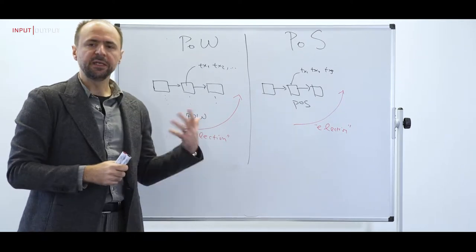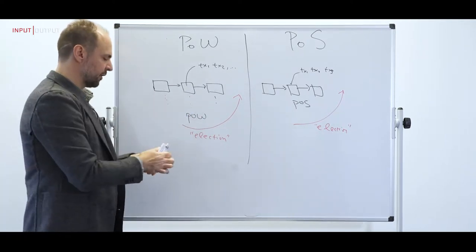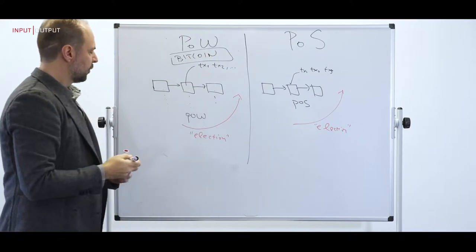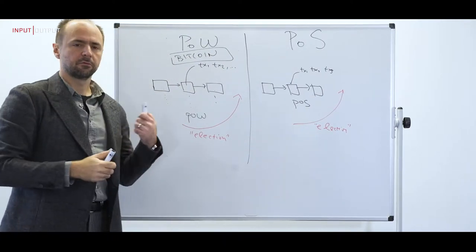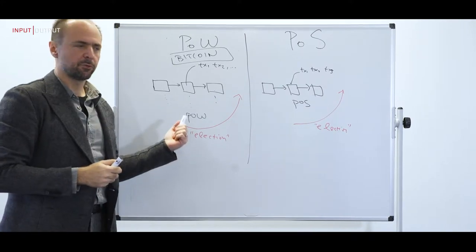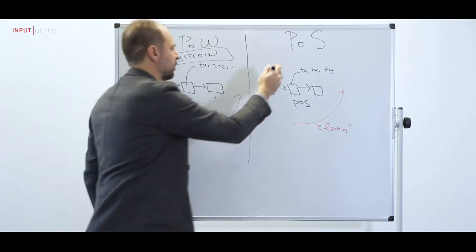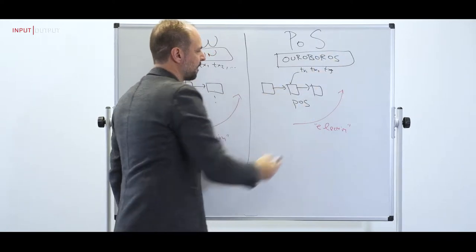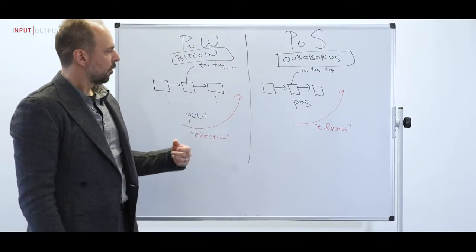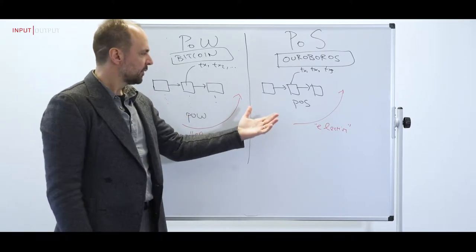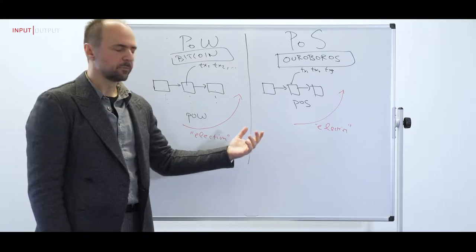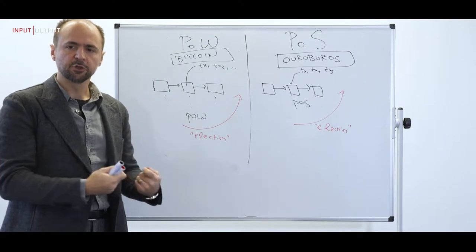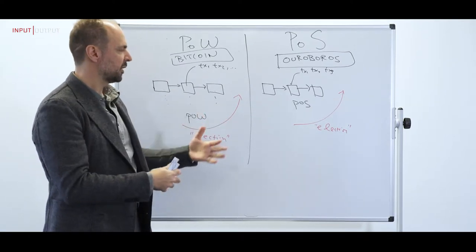You can think of both protocols as operating like an election — at any given moment, one of the parties is elected to produce the next block, essentially by random sampling. In proof-of-work, the election is based on solving a moderately hard cryptographic inequality, as in Bitcoin. In proof-of-stake, specifically Ouroboros, the election is based on a cryptographic protocol that creates randomness and stores it in the blockchain. In both cases, the high-level logic is similar: there is an election process that enables one party to issue the next block.